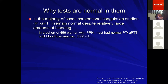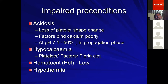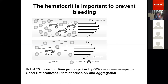A study showed that in PPH patients, PT and APTT remain normal until blood loss reaches 5 liters — so they are not indicators of coagulopathy in PPH. Other impaired conditions include acidosis (low pH decreases coagulation efficiency), hypocalcemia from transfusion of citrated blood products, dilutional effects from other fluids, low hematocrit, and hypothermia. Coagulation functions optimally at 37°C, so laboratory tests done at 37°C may overestimate the hemostatic competency of a hypothermic patient. A hematocrit of 30% (hemoglobin 9–10 g/dL) is necessary for adequate platelet function — at lower hematocrit, platelets remain in the center of vessels and cannot efficiently reach the bleeding site.